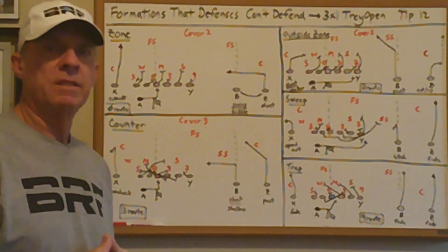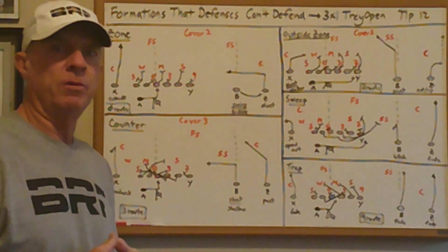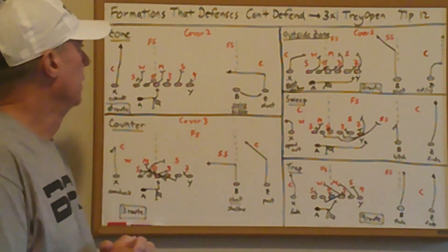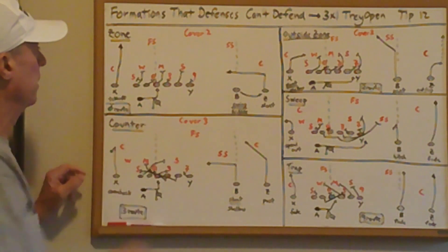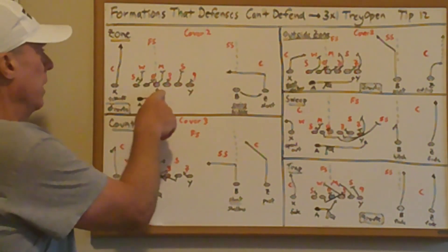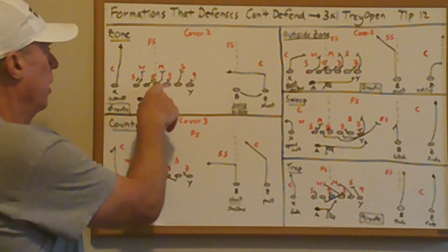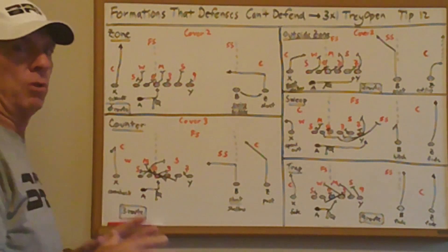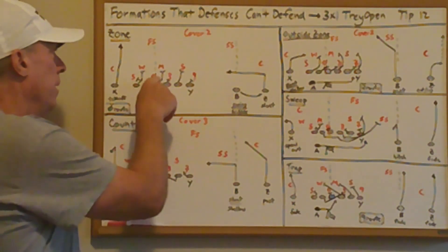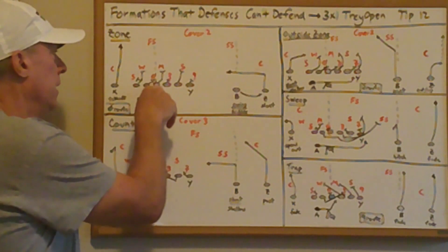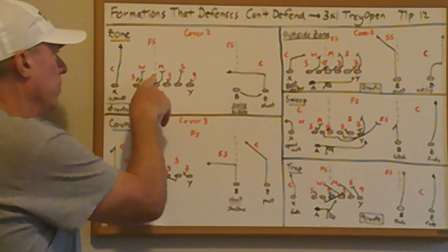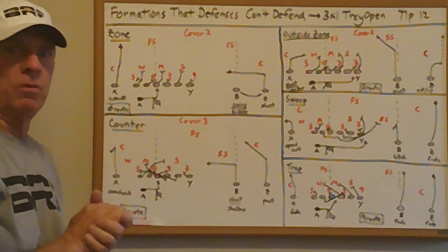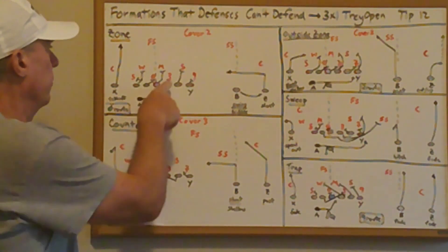Now for run plays out of Trey Open. The first is inside zone. Inside zone is always run down the midline and always run at the 3-technique, because that gives the best blocking angles and the ability to attack the open A-gap between the shade and the 3-technique.